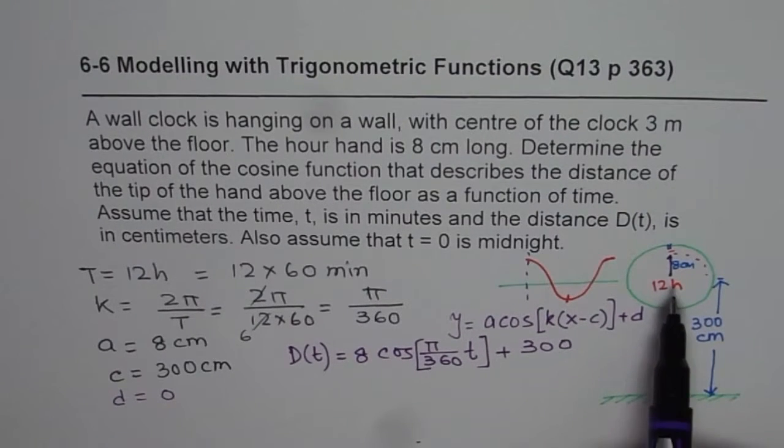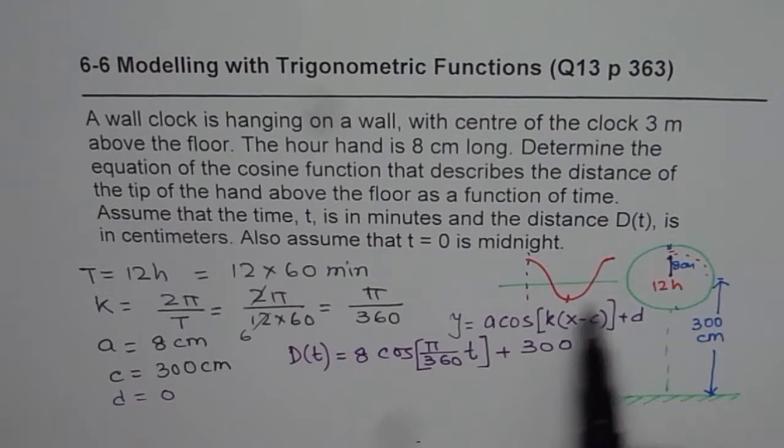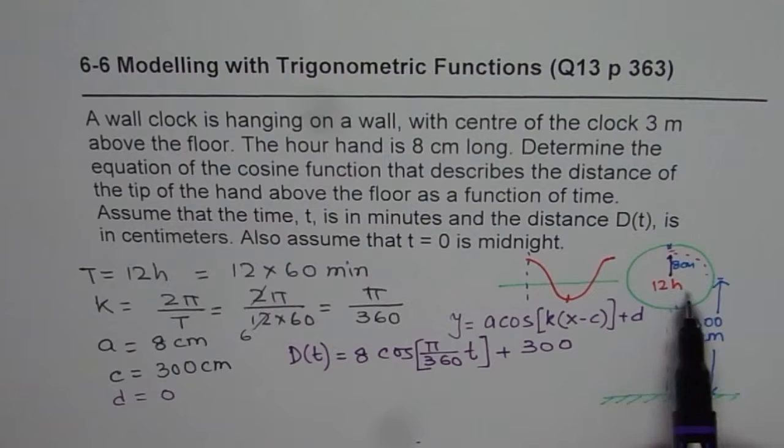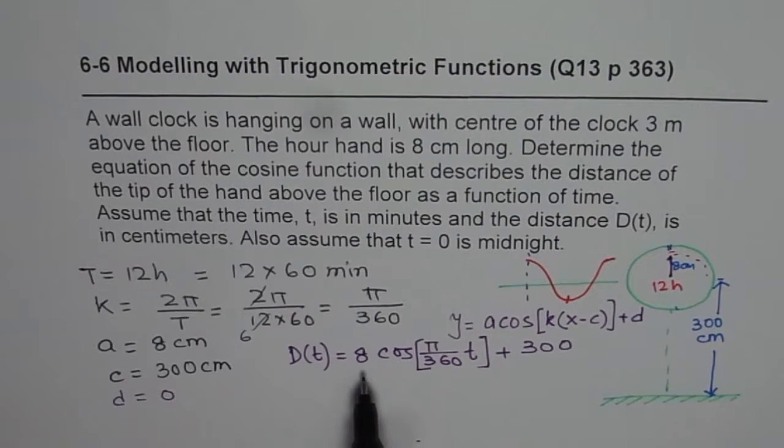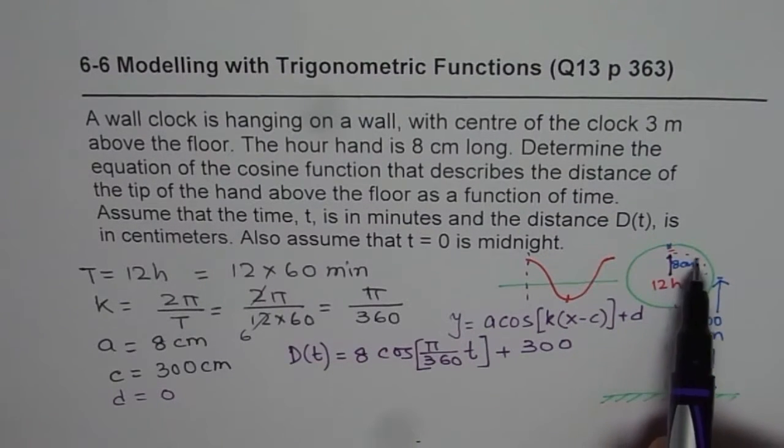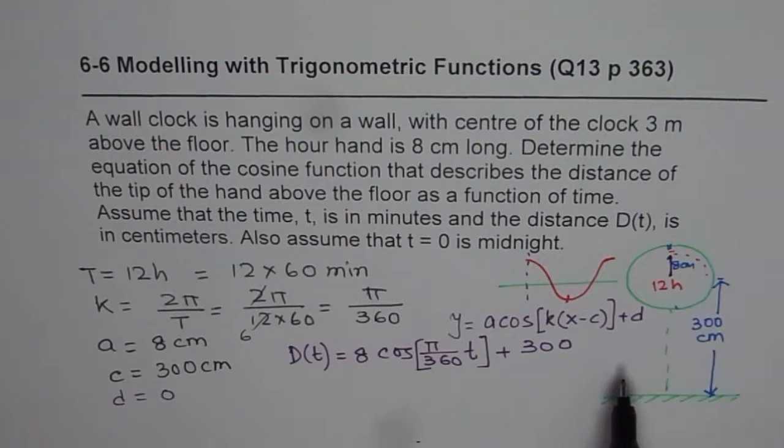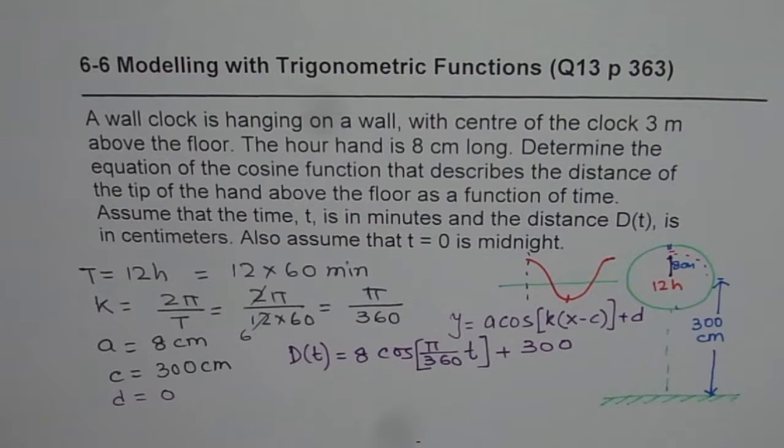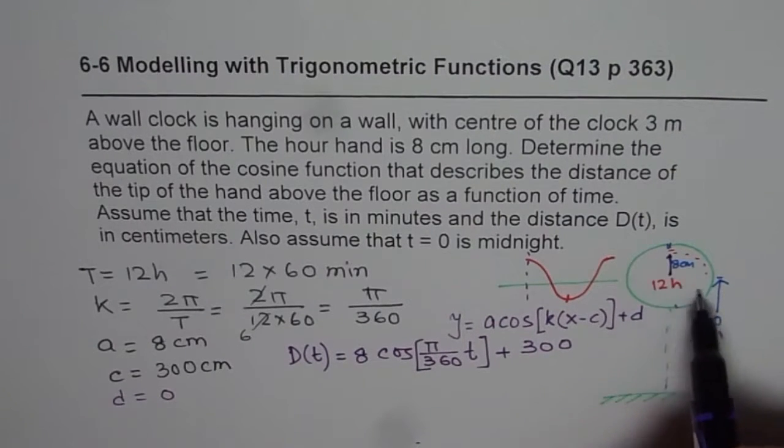Do you see that? Now in case, you need to write similar equation for the minutes or seconds hand. Then what you need to do is, replace a with the length of the minutes or seconds hand. And k will change. Since how much time does one minute hand takes to go around, and how much time does a second hand takes to go around?